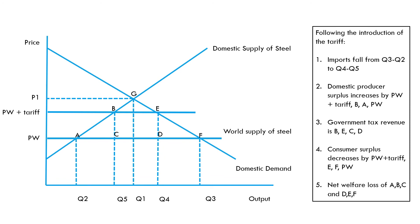So this is our final diagram, and this is the one I would suggest you take down in your notes. I would always suggest labelling it because it can get very confusing when trying to colour things in — and obviously in the exam you can't use different colours. So draw a diagram like this and label the key points.